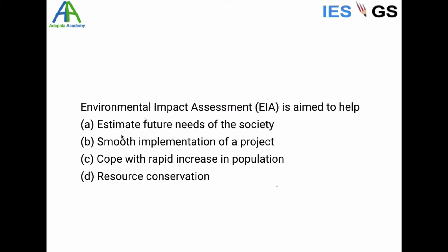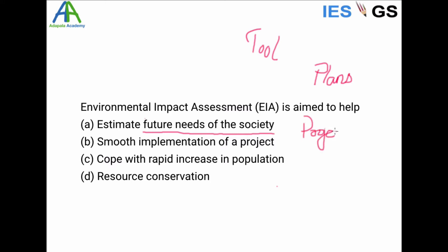The options are: estimate future needs of the society, smooth implementation of a project, cope with a rapid increase in population, and resource conservation. EIA is not about future needs of the society, and it is not about coping with an increase in population — so we are not concerned with population here.